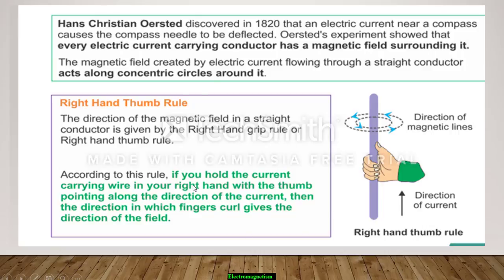So what we can see: if we hold the current carrying conductor in your right hand with the thumb pointing along the direction of the current, then the direction in which the fingers curl gives the direction of the field.